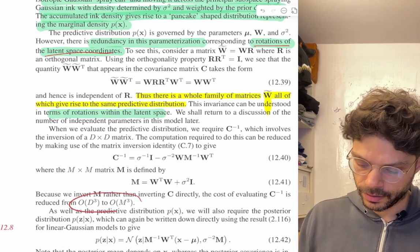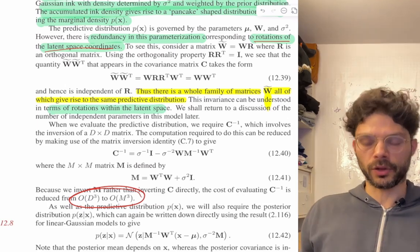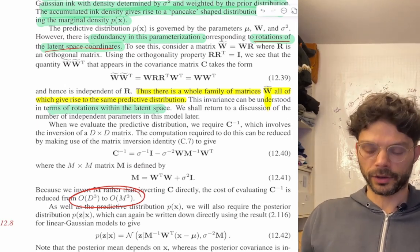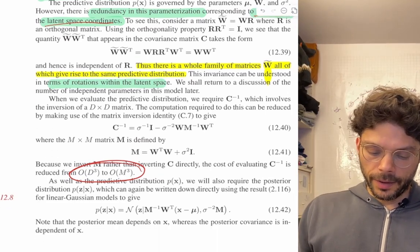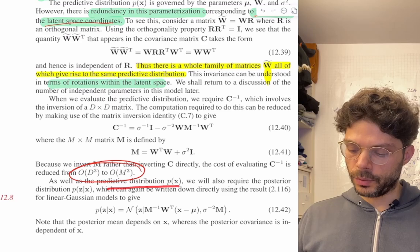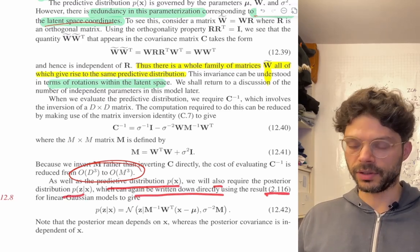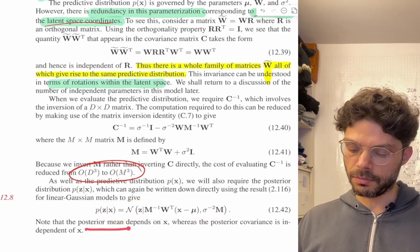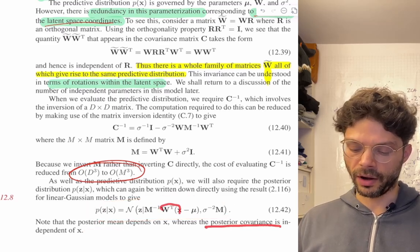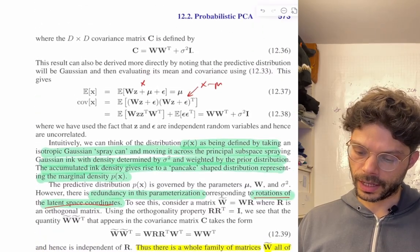As well as the predictive distribution, we also require the posterior distribution p(z|x), which can again be written down directly using the Gaussian identities. Notice that the posterior mean depends on x, while the posterior covariance is independent of x.